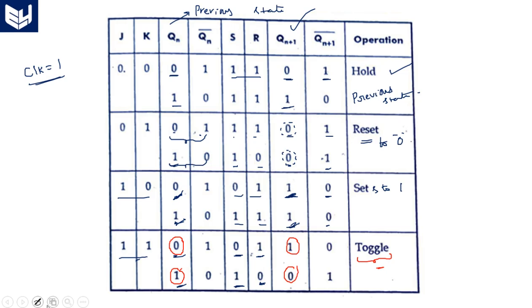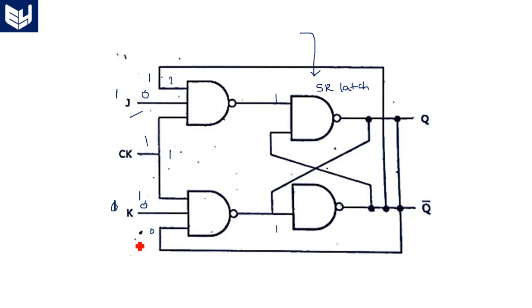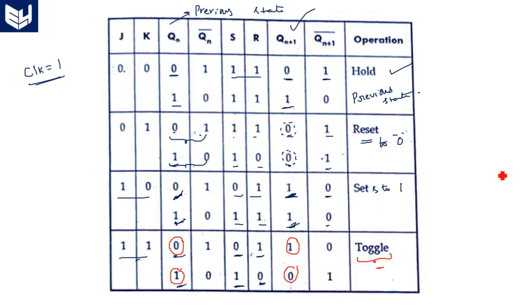The same circuits can be implemented with CMOS in digital logic design. Since everything is made up of CMOS transistors, all four NAND gates are simply constructed using CMOS NAND logic. We already know how the CMOS NAND gate is constructed, and the same can be used for the implementation of this JK latch. Thank you.